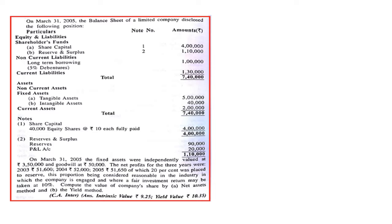Then, reserves and surplus, note number 2. Under reserves and surplus we have two reserves: one is reserves and the other is P&L account. Under non-current liabilities, long-term borrowings are 1 lakh — that is 5% debentures. Current liabilities are 1 lakh 30,000. The summation of all liabilities is 7 lakh 40,000.